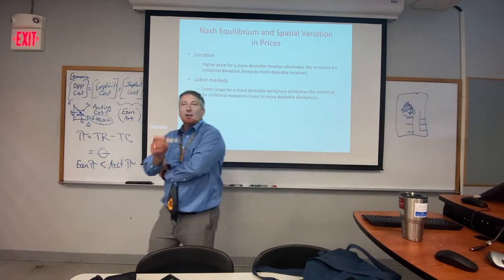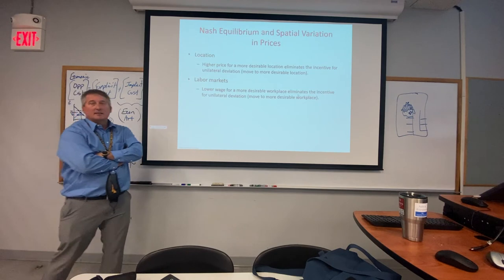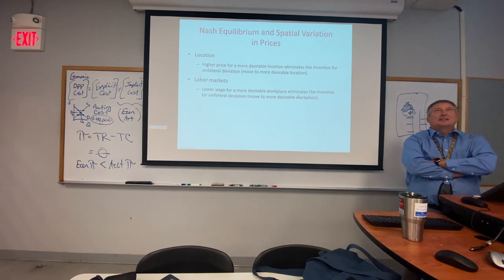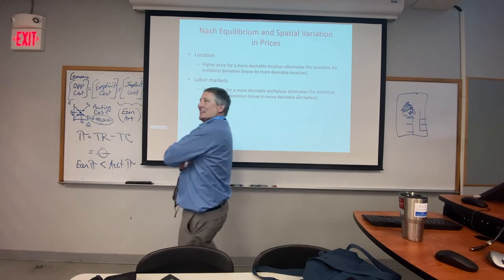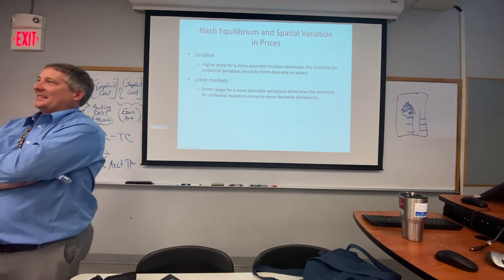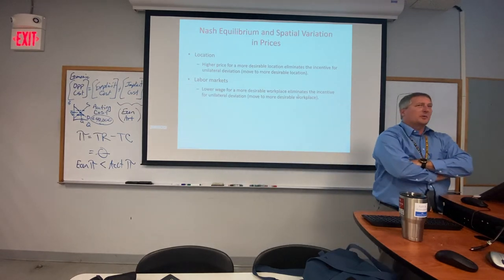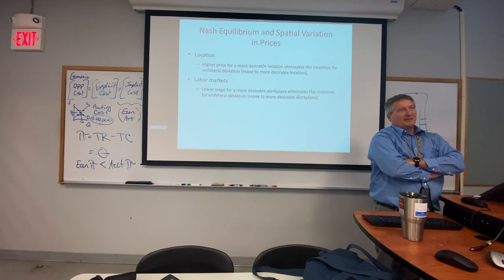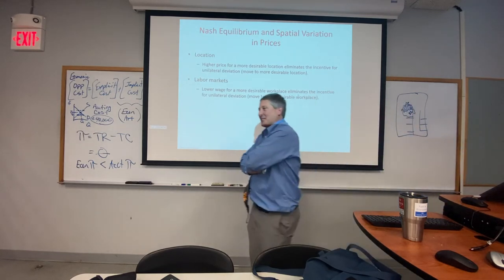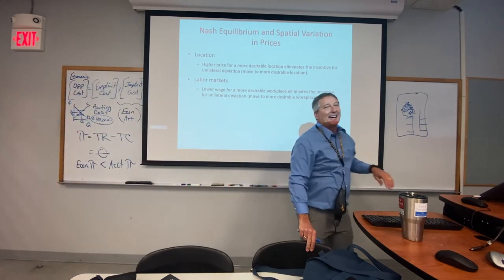In the labor market, consider an example: Walmart pays a dollar more per hour than a local grocery store like Chopper. So why do people work at Chopper? Because Walmart's environment is less desirable. The desirability factor matters. Locally, Chopper is a higher-end, nicer store — so workers might take a dollar less per hour to work there.